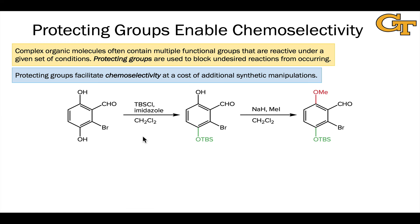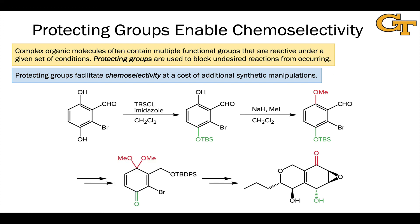To get around that, we can make use of a protecting group approach, realizing that the bottom hydroxyl is a little more sterically available because of the smaller size of bromine relative to the aldehyde functional group. Treatment with TBS chloride and base selectively protects that bottom hydroxyl, leaving the top hydroxyl available for methyl ether formation. We can then remove the TBS protecting group and do other chemistry with the oxygen highlighted in green. This allows us to ultimately distinguish between those groups by selectively protecting the less sterically hindered hydroxyl group.